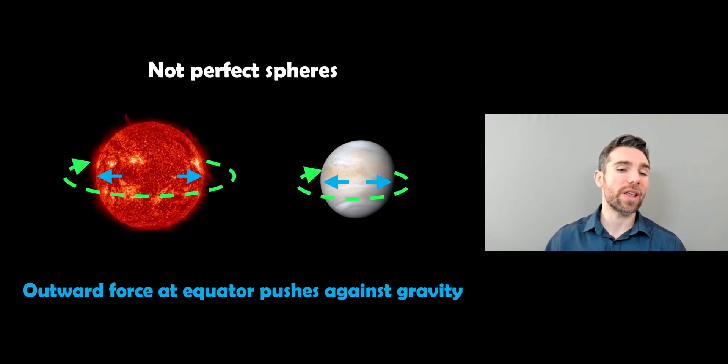But it's also worth noting that they are not perfect spheres, they're not perfectly round because they are rotating at the same time. So as they rotate, you'll find that there's an additional force that's going to overcome some gravitational force trying to collapse it at the equator. And it means that the equators are a little bit wider than at the poles because they're rotating.